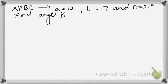Okay, so today we're going to take a look at an example using the ambiguous case of sine. We have triangle ABC, and we're given that side A equals 12, side B equals 17, and angle A equals 21 degrees.